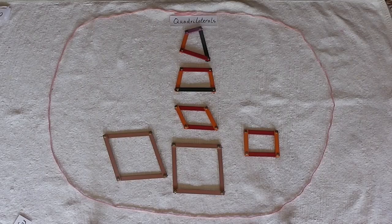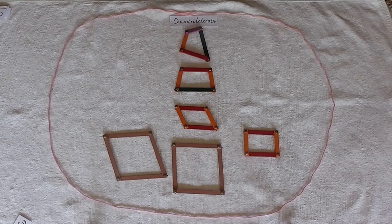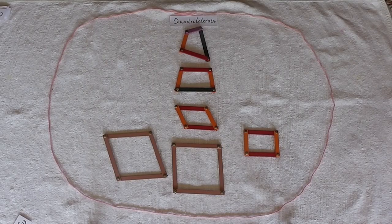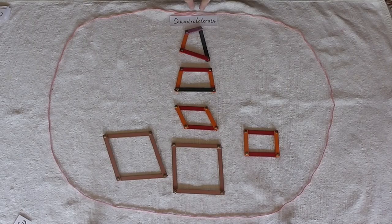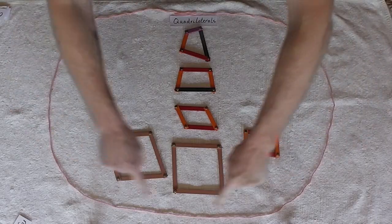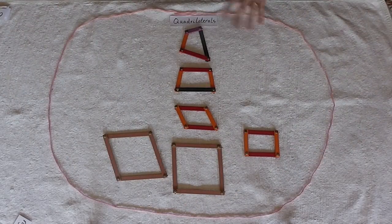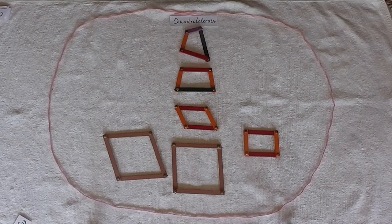I've placed all of the quadrilaterals from our last lesson where we just named the quadrilaterals and talked about some of their characteristics. I've placed them all inside of this pink circle. So everything inside of this pink circle is a quadrilateral.